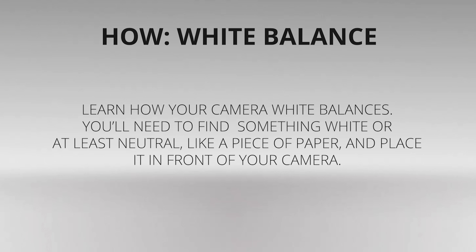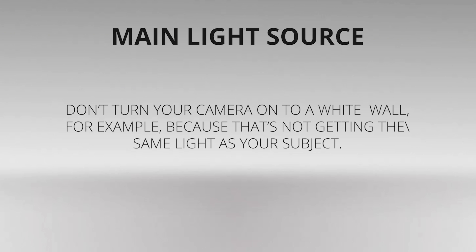The first step is learning how your camera white balances. You'll need to find something that is white or at least neutral, like a piece of paper, and place it in front of your camera. For a typical digital camera, there will be a setting in your menu or a separate button. In DSLR cameras, white balancing can be a little more complicated — check your user manual for the details. The key is to make sure your white reference is being lit by the main lighting source; don't point your camera at a white wall, for example, because that's not getting the same light as your subject.